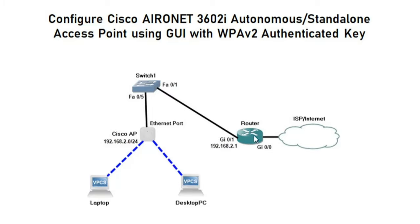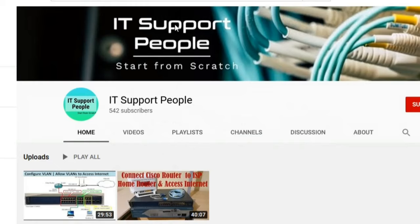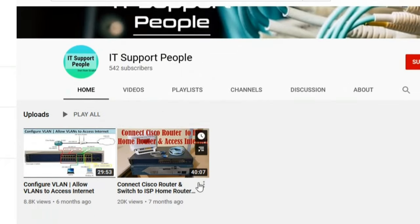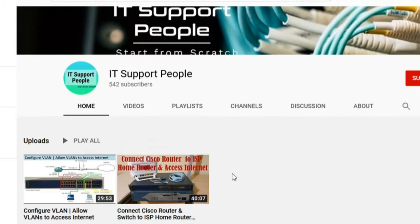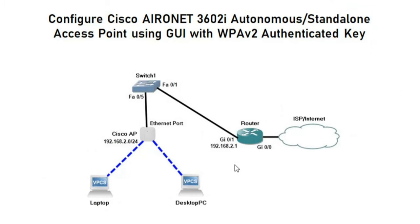I have a previous YouTube video on how to configure the Cisco router and access the internet. The gigabit 0/0 port of the Cisco router is connected to the ISP network and the gigabit 0/1 port is connected to the FastEthernet port of the switch. I have created a DHCP pool in the Cisco router where the network is 192.168.2.0 with subnet mask /24 and the default router IP address is 192.168.2.1.